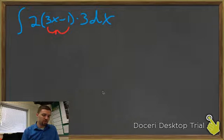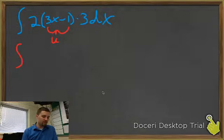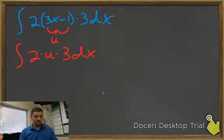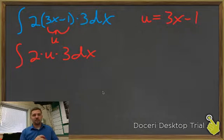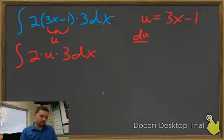I could call this 3x minus 1 — I could call that u. We've been doing a lot of substituting with u with the chain rule, so I could rewrite this as 2 times u times 3 dx. Then I could try to integrate that. But unfortunately, this is the important part: I can't integrate u with respect to x. That's a problem — I've got u's and x's and they just don't get along. But a little bit of math will make it work. So let's say u equals 3x minus 1, and I'm looking to get rid of that dx and replace it with du. To get that du, I can take the derivative of u with respect to x.